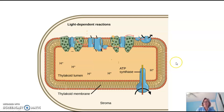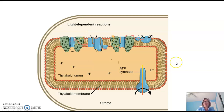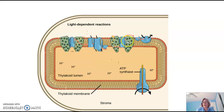Let's look up close at a thylakoid membrane to see what's going on in the light-dependent reactions. Pictured here are the outer and inner membrane of the chloroplast and a very small intermembrane space. This would be the stroma. This phospholipid bilayer pictured here is the thylakoid membrane, and the inside space is the thylakoid lumen. Embedded in the thylakoid membrane are a variety of complexes called photosystems, and this is where our chlorophyll — our photosynthetic pigment — is located.